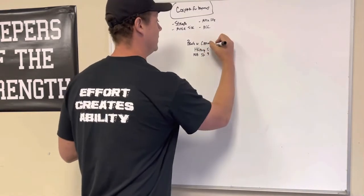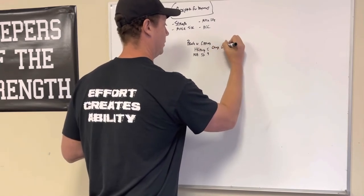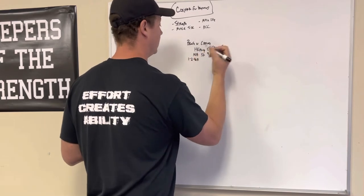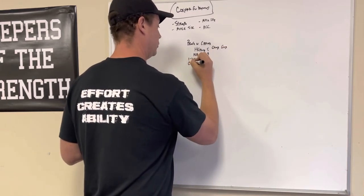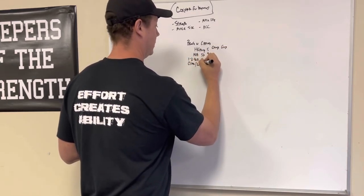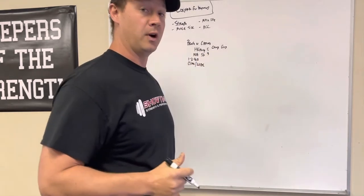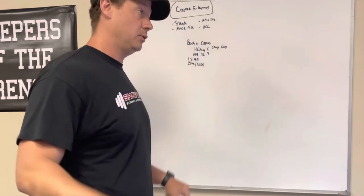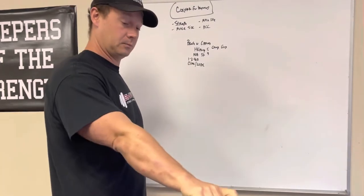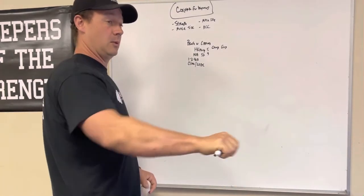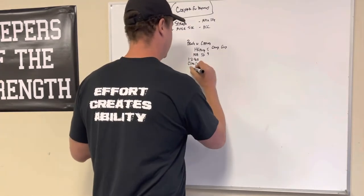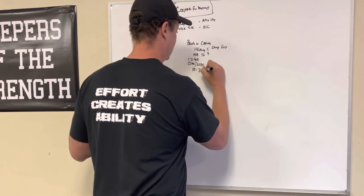So if on these, let's say you're using a comp grip, let's do one to two sets after. And you can change the grip to either close or wide, so close like right in on the knurling, or wide. And you can even go beyond competition grip, so beyond that index finger on the power ring. And let's go like 10 to 20 reps.